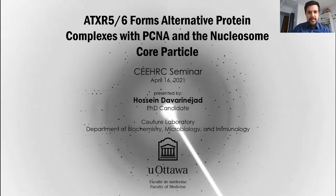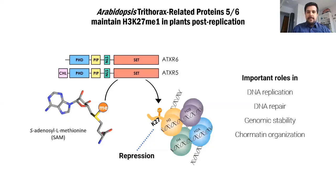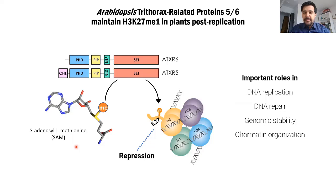Thanks for the introduction. Hi everybody and thank you for being here today. In this project, I worked with ATXR5-6, which are plant histone-lysine methyltransferases that monomethylate lysine 27 on histone H3. This is generally a repressive mark and it's important in DNA replication, DNA repair, the stability of the genome, and organization of chromatin.